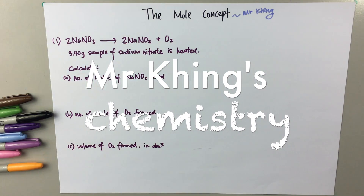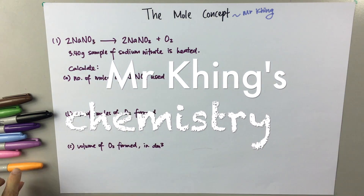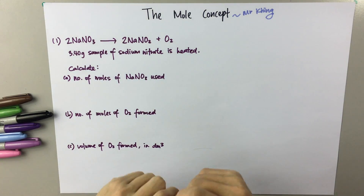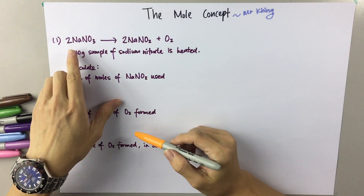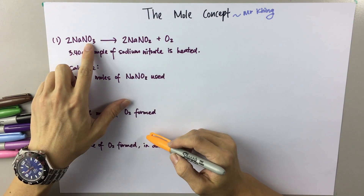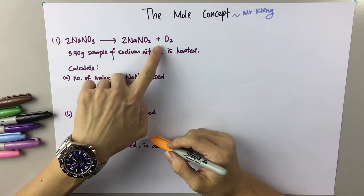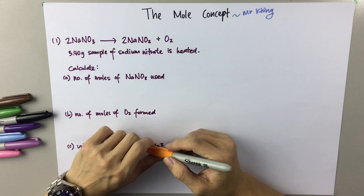Now we are going to try some past questions from the chapters of the mole concept. So for example, given 2NaNO₃, it will form 2NaNO₂ plus O₂.